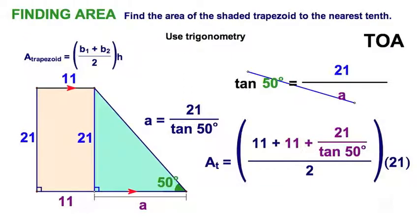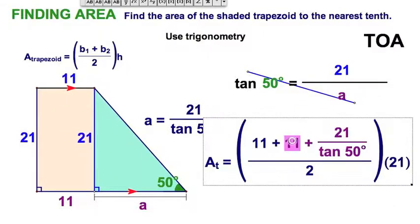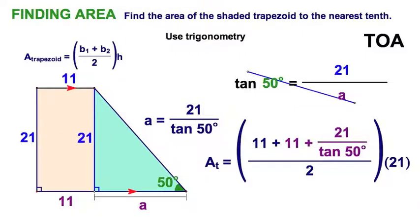Here's my substitution. In purple, right here, this expression is the 11 and the A added together. I have to add it to the other base, then divide by two. Let's hit the calculator right now.